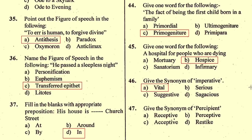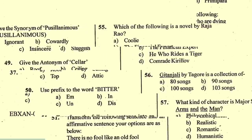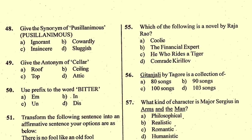Question number 46: Give the synonym of 'imperative.' The synonym is 'vital', V-I-T-A-L, given in option A. Question number 47: Give the synonym of 'percipient.' The synonym is 'perceptive', given in option B. Question number 48: Give the synonym of 'pusillanimous.' The synonym is 'cowardly', given in option B.